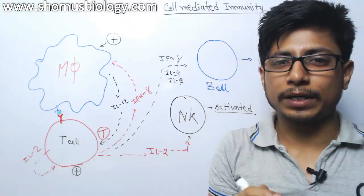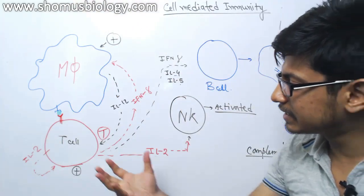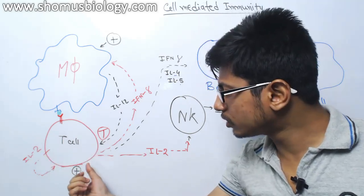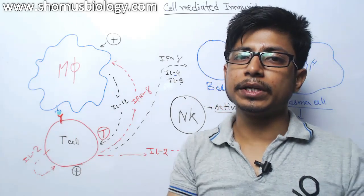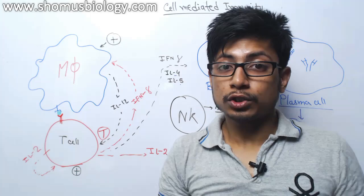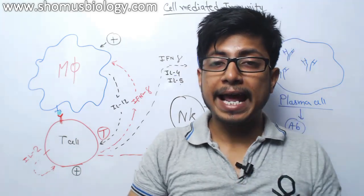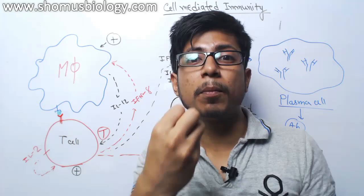Another mode that you can tell is these T helper cells, they also start secreting interleukin-1. Those interleukin-1 help naive T-cells to get a response.